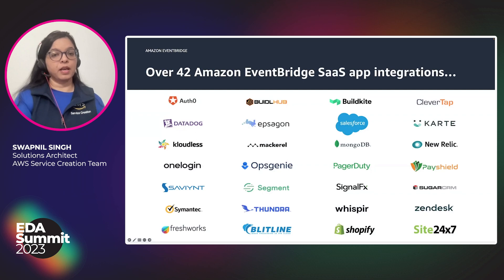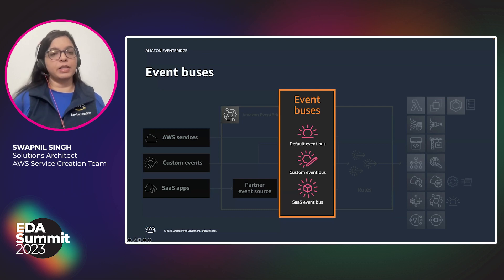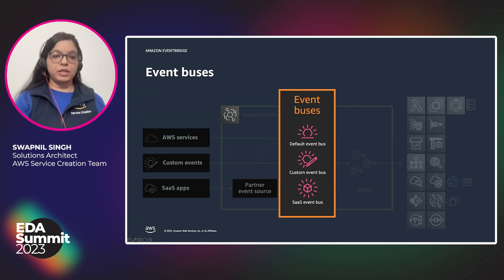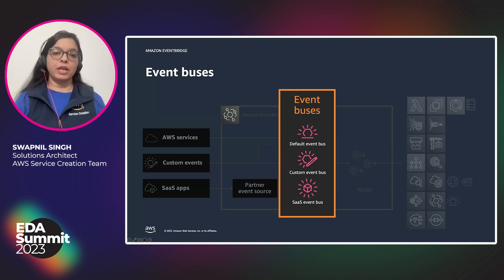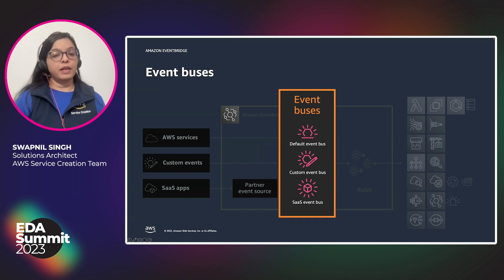These are some of the partners that already integrate with EventBridge. As for event buses, CloudWatch events — which AWS services create — are routed to the default event bus. In addition to that, you can create custom event buses for your business events, dividing them into various domains. For example, you can create a marketing event bus specific to marketing content. There is also a SaaS event bus, which you can create to receive partner events.